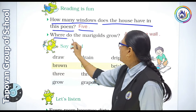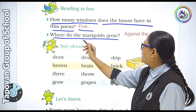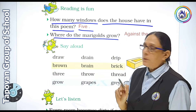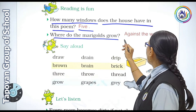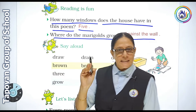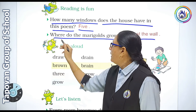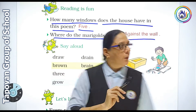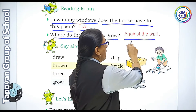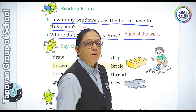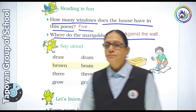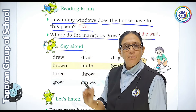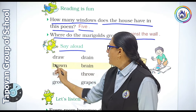Marigolds grow — marigolds grow against the wall. Where do the marigolds grow? Against the wall. Say it out loud.